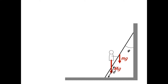We can write the weight of this person as their mass capital M times g, located at some height D up the ladder. The weight of the ladder itself is lowercase mg, placed at its center of mass. We have the normal force of the ground pushing up against the ladder, the normal force of the wall pushing away from the wall against the ladder at the upper corner, and the frictional force pushing to the right to hold the ladder from sliding to the left.